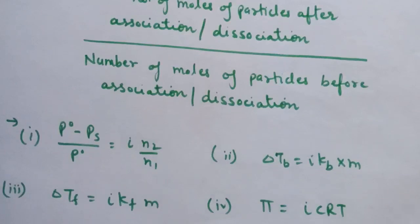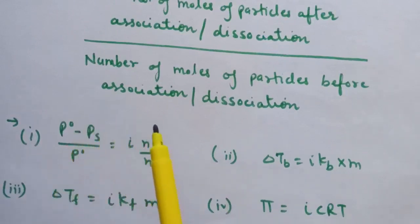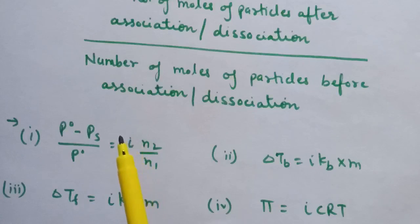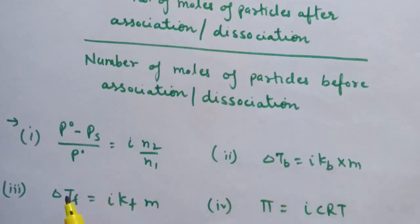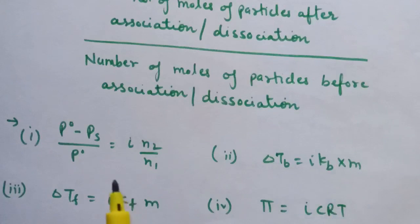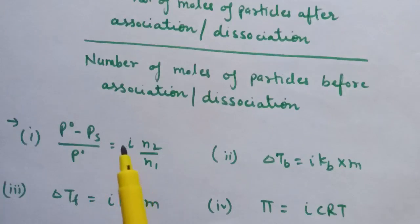When we introduce the Van't Hoff factor i into all four colligative expressions, they become: relative lowering in vapor pressure — (P0 − Ps)/P0 = i × (N2/N1); elevation in boiling point — ΔTb = i × Kb × m; depression in freezing point — ΔTf = i × Kf × m; and osmotic pressure — π = i × CRT. If association or dissociation takes place in an electrolyte, we include this Van't Hoff factor. For non-electrolytes, we do not include it.